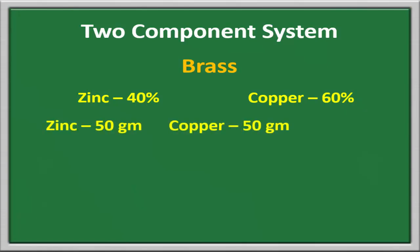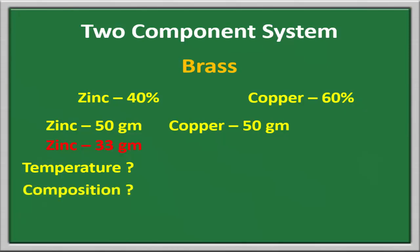If I take 50 grams of zinc and 50 grams of copper, will it give a homogeneous mixture of brass? No — it will contain only 33 grams of zinc and the rest is copper. The remaining zinc will remain as an impurity. So how do we know at what temperature the brass alloy is formed and what is the exact composition? The answer is the phase diagram.